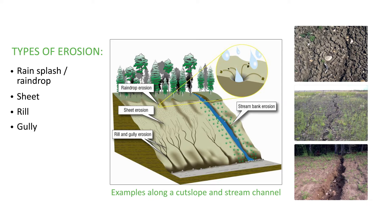Gully erosion: gullies form where rills merge together or where a single flow path has grown into a gully. Action should be taken once rills are formed because gullies can be challenging to repair. Stream channel erosion occurs along the stream bed during bed load movement and along the stream banks due to undercutting and redirected flows. The energy and impact of raindrops is highly underestimated.